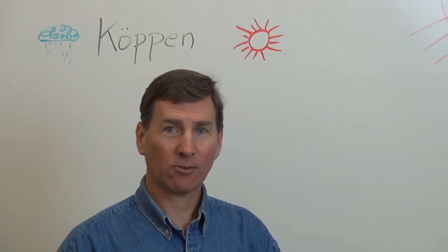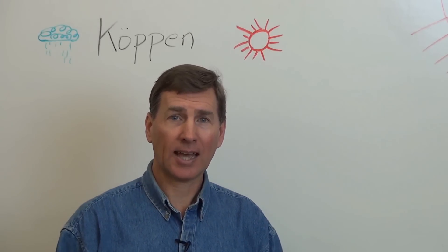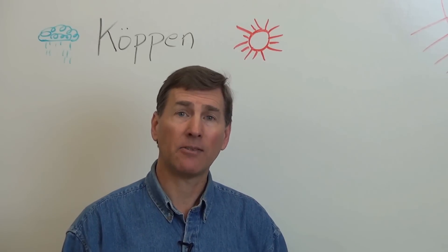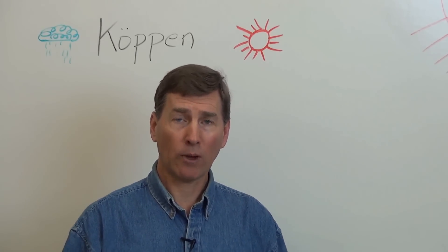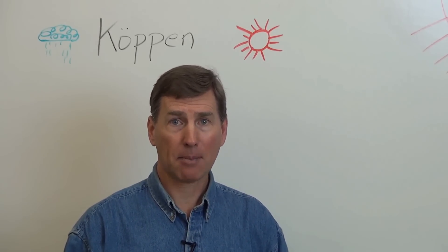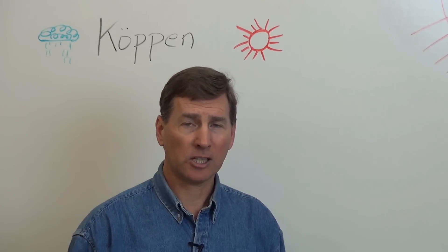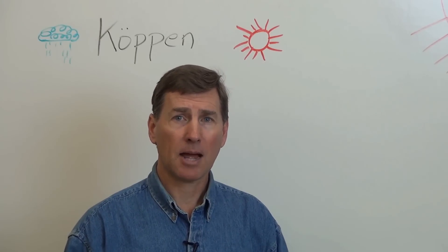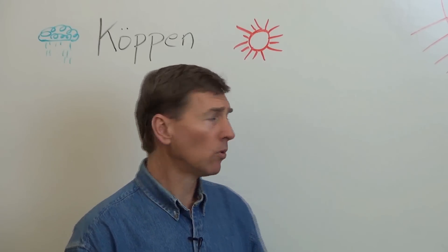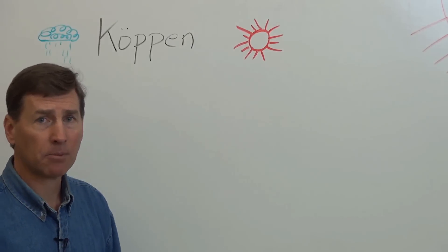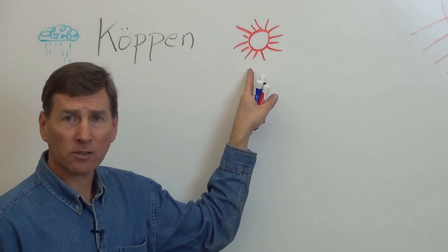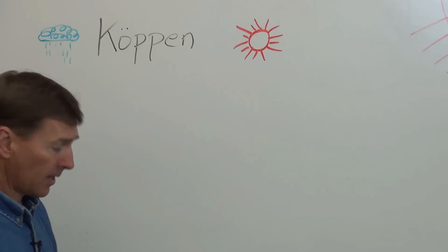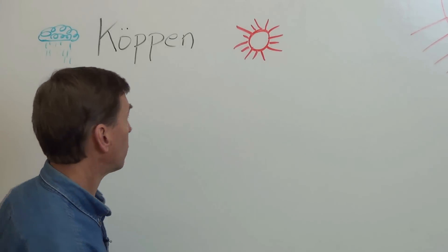All right, now we're going to march down through this lettering system. If you ever look at a Köppen climate map, then this will make sense to you. In fact, I recommend that you go to the web and find a Köppen climate map so you can follow along. Maybe pause this video, kind of capture what we're talking about. It's pretty easy to find that map. Okay, so number one, remember Köppen climate system is based on a couple things, temperature and precipitation. So over here I have some clouds that I drew. And let's take a look now at the lettering system.